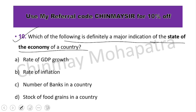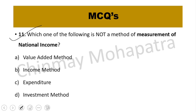Question number ten: which of the following is definitely a major indication of the state of the economy of a country? The right answer is the rate of GDP growth — GDP growth rate indicates the actual or major indicator of the state of the economy of a country.